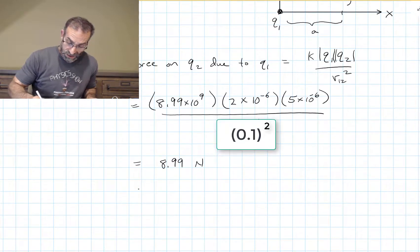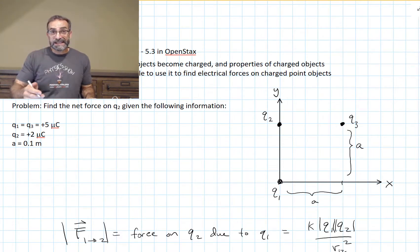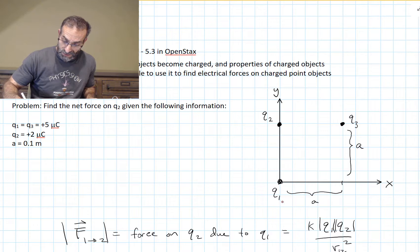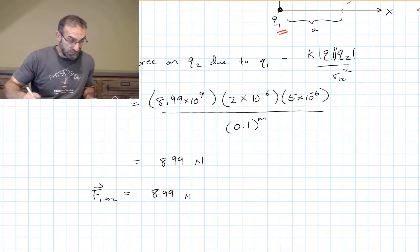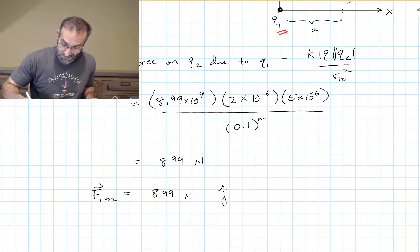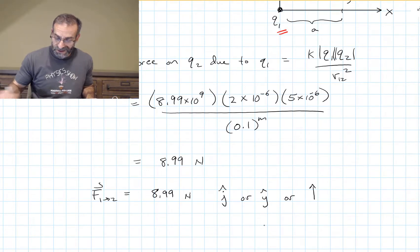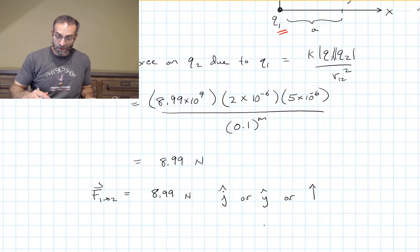Now, of course, we need the direction. Q1 and Q2 are on the y-axis, and they repel each other. They're both positive. So if I use red for my force from 1 on 2, the force would be pushing Q2 in the positive y direction. So I need to put here j-hat, or y-hat, or an arrow in that direction, but we need to signify that this force is in the positive y direction, towards the top of the page.